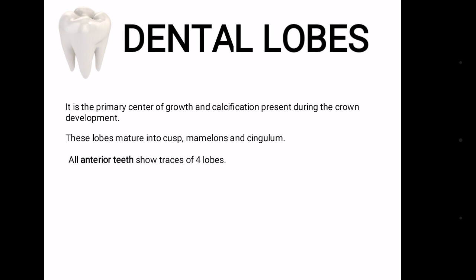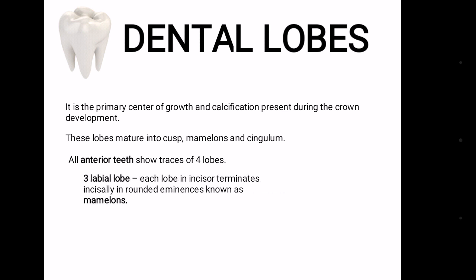All anterior teeth show trace of 4 lobes — 3 labial lobes. Each lobe in the incisor terminates incisally in a rounded eminence known as mamelons. These mamelons wear off with time and use.